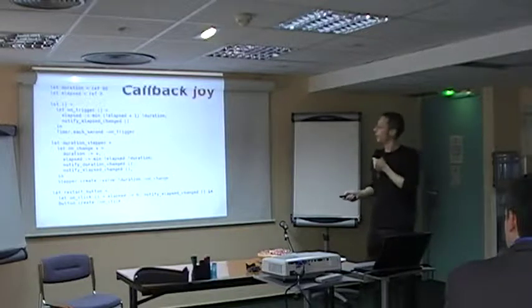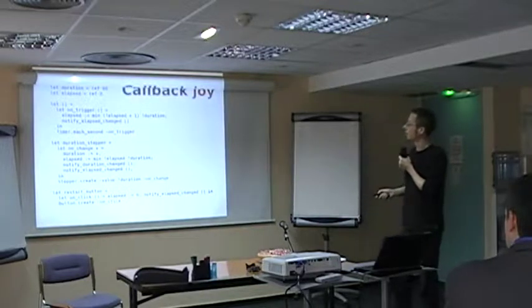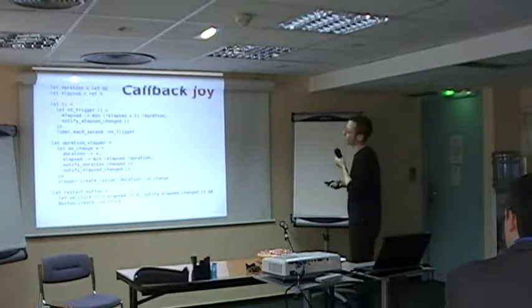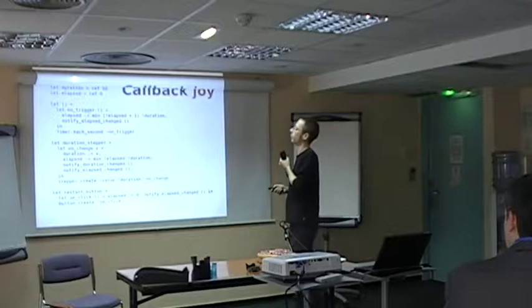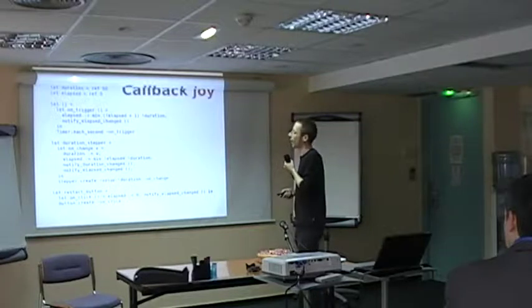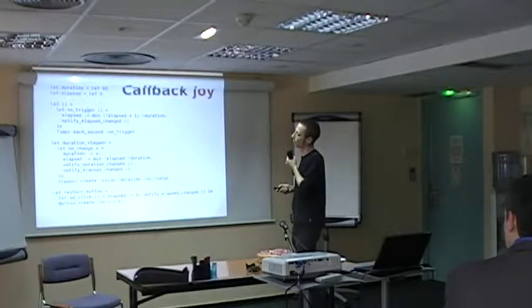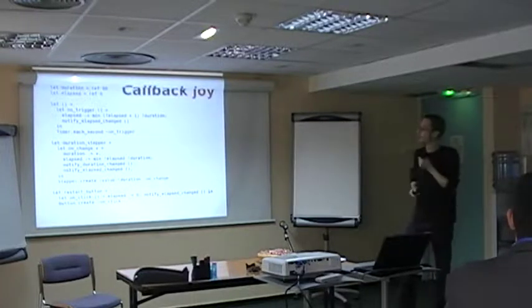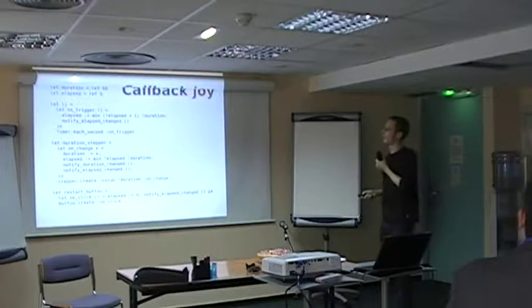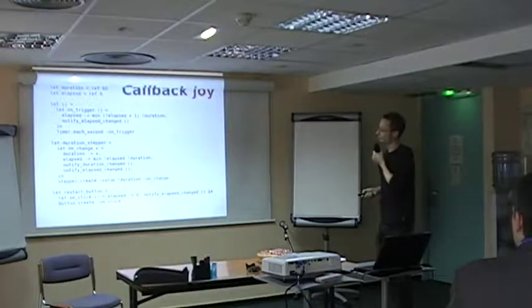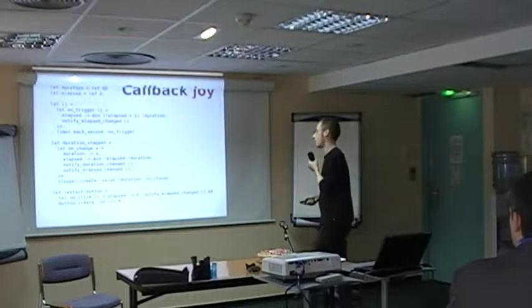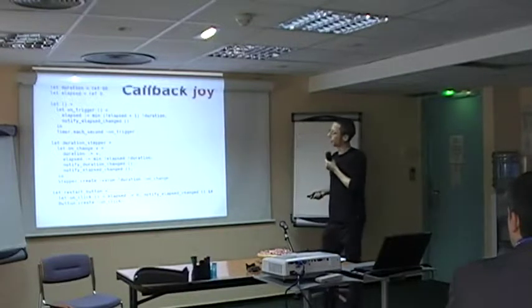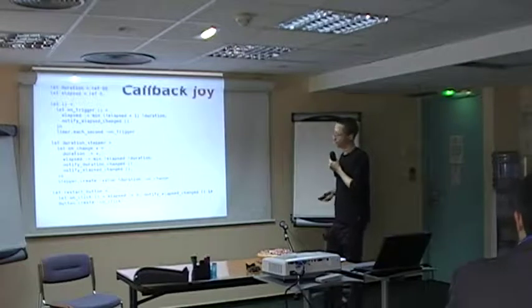And then you would create a stepper here with this callback here that whenever the stepper value changes, you set the duration to the new value and you may have to change also the elapsed time if the duration is smaller than the elapsed time that you had before. And you have to notify again that this value changed. And finally, you have here a callback for the button where you just set elapsed to zero.